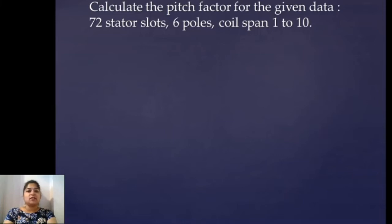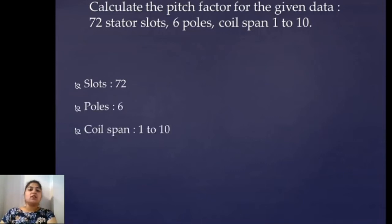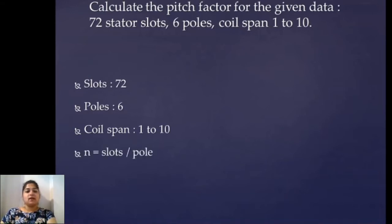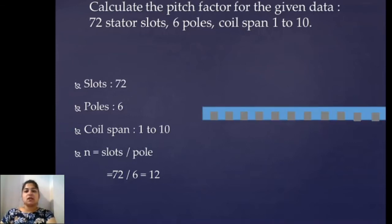Calculate the pitch factor for the given data: 72 stator slots, 6 poles, and coil span is 1 to 10. In a similar way, we write down the slots, poles, and coil span. To check whether the coil is full pitch or shorted, we find N — slots per pole — which comes out to be 72 divided by 6, which is 12. So for a full pitch coil it will be from 1 to 13.